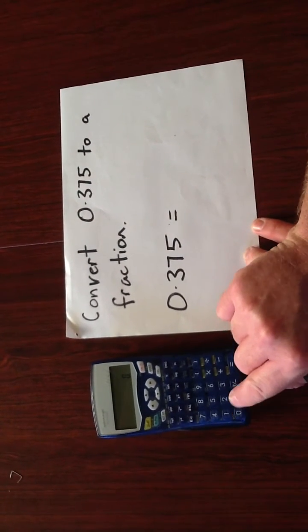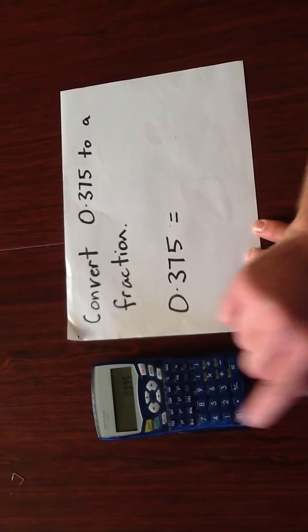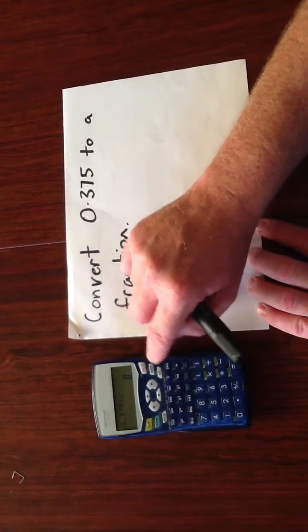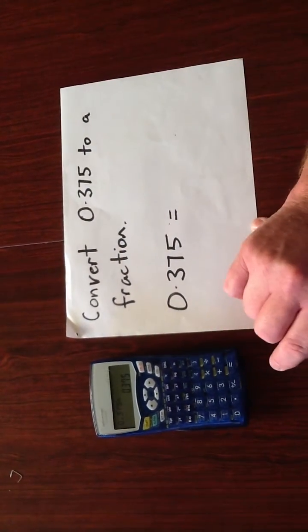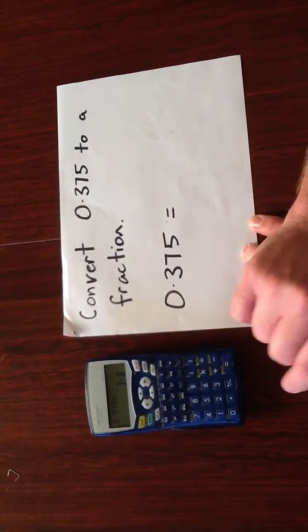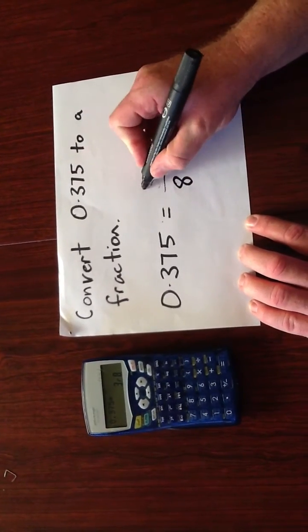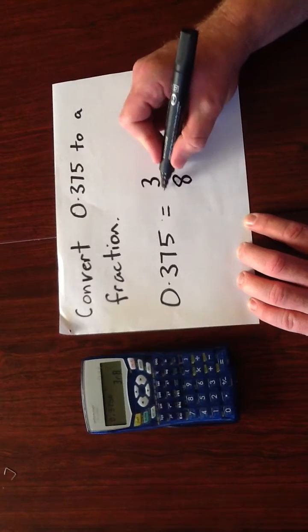So we type in 0.375 and then press the fraction button. Sorry, incorrect. We press equals first of all and then the fraction button. And the answer is 3 over 8.